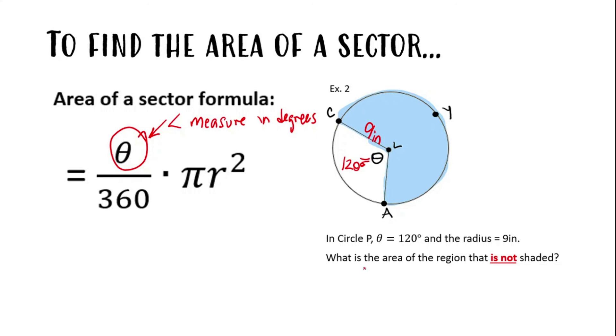In our formula, we'll write 120 over 360 times pi times 9 squared. We put all that stuff into our calculators, and this will give us 82.8 square inches. That is the area of the non-shaded region. And that's it.